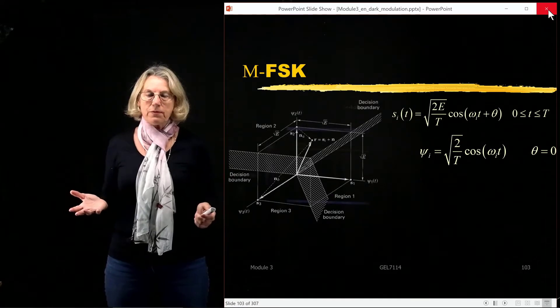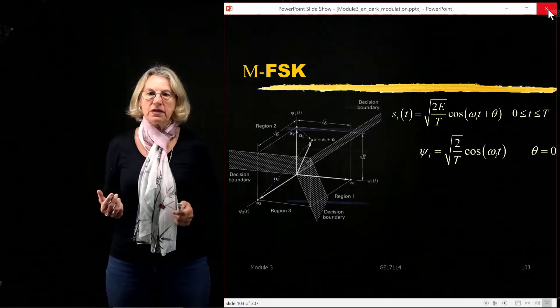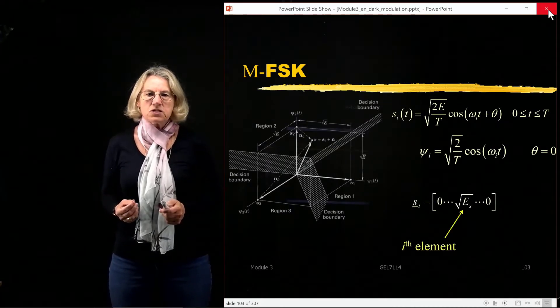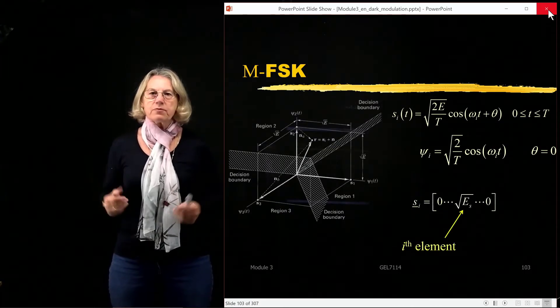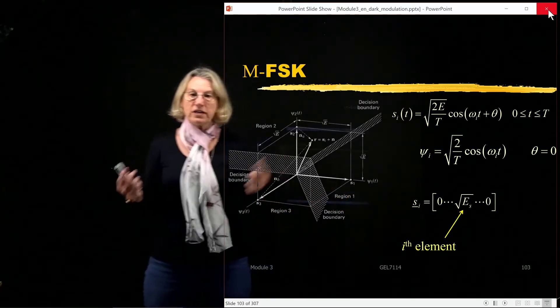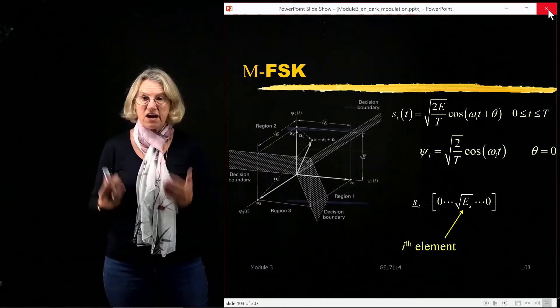So this is the signal space representation and now we have to determine what is the minimal distance in this signal space. So the first thing we look at is the vector representation of the symbols and the symbols are orthogonal from one another. They are the basis vectors. They are orthogonal.